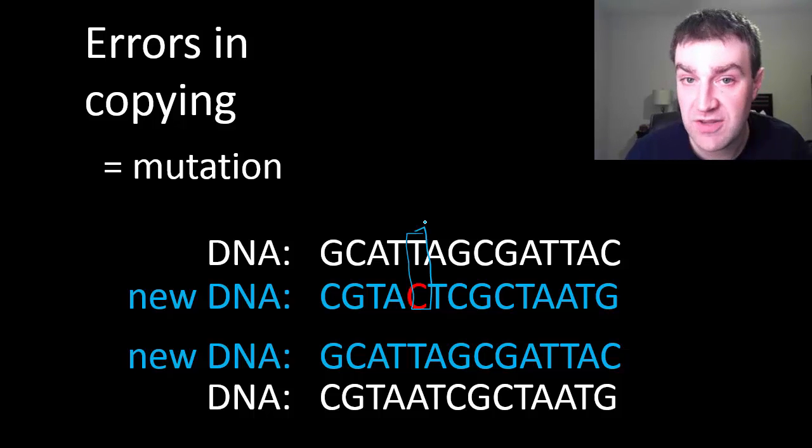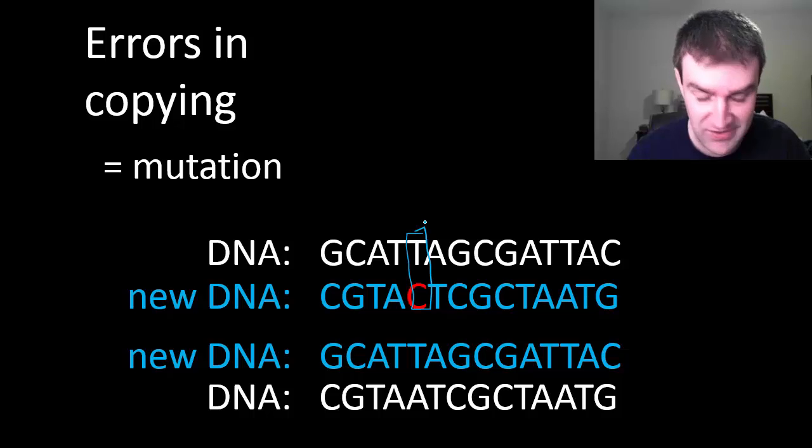And why might this happen? I thought that T's always paired with A's. Well, they do almost all the time. Maybe we estimate just one out of every hundred thousand letters kind of pair up incorrectly, not a number you need to memorize. But if there's billions of letters of code, that's enough to create quite a lot of potential errors.